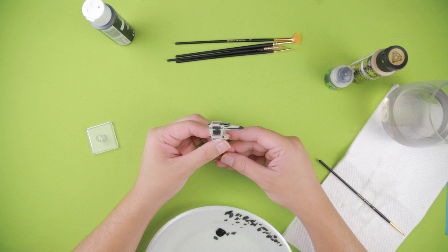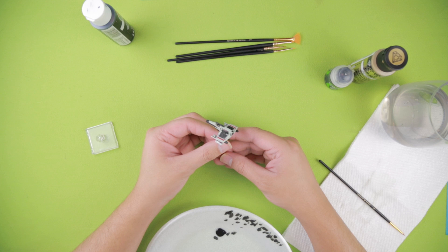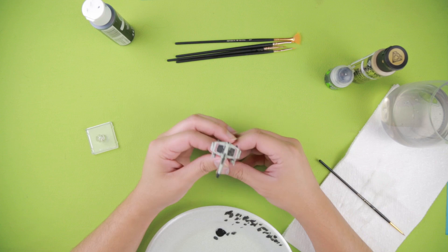And again, I'm not trying to do a full repaint. I just want to make it so that my ship looks like my ship when I come up against another squadron. So we'll let that black dry and then we'll add the gold.